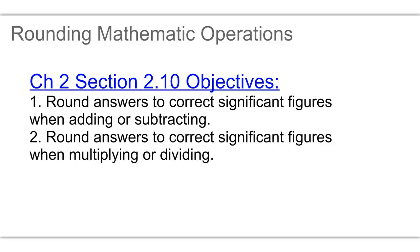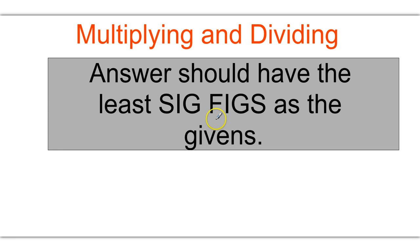Chapter 2, Section 2.10. We're going to round mathematical operations to correct significant figures. So when multiplying and dividing, your answers should have the least sig figs based on your givens. We'll look at the original numbers in the problem, and that'll dictate how many sig figs our answer can have.